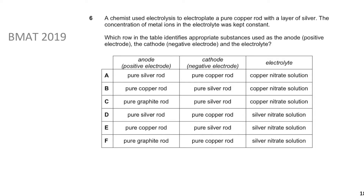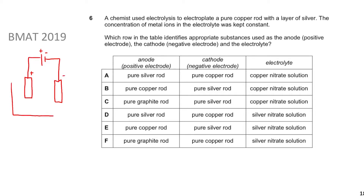Let's do a bit of revision on how electrolysis works. In electrolysis you have a cell hooked up to two electrodes. In a cell the big line is the positive terminal and the smaller line is the negative terminal, so the electrode hooked up to the positive terminal becomes the positive electrode. The whole thing is bathed in a solution which contains the electrolyte.